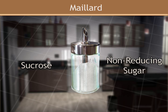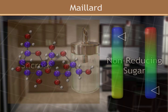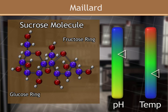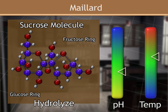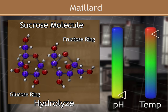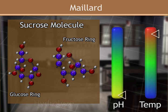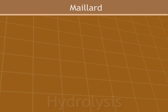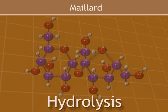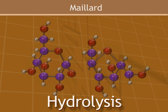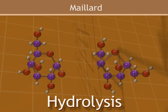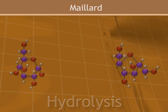However, high temperatures and low pH values can cause the sucrose molecule to hydrolyze — that is, break apart — into one unit of glucose and one unit of fructose. After hydrolysis, the glucose and fructose can begin participating in the Maillard reaction.